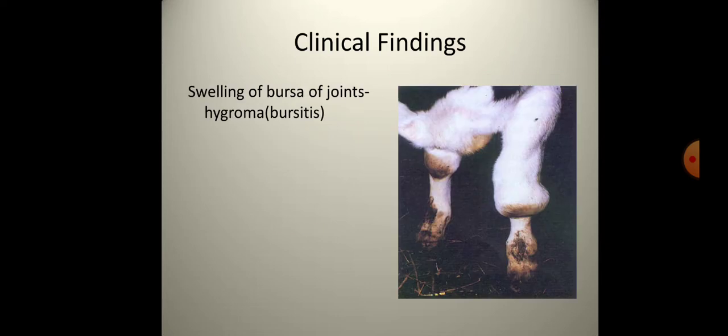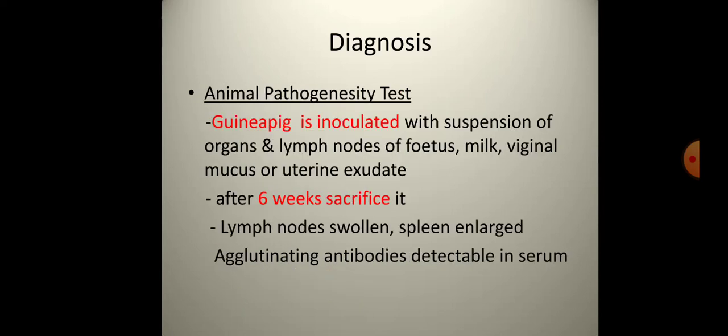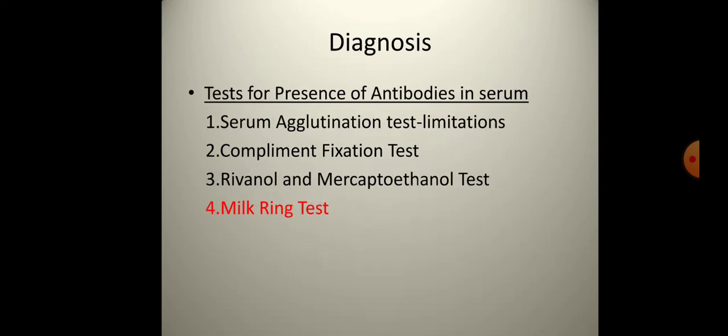Diagnosis is made by isolation of organisms from tissue, exudate, microsculture, smear content, lung of aborted fetus, spleen, placenta, uterine exudate, vaginal discharge, and milk. In animal pathogenesis testing, guinea pigs are inoculated with suspension of organs and lymph nodes of the fetus along with uterine exudate; after six weeks, sacrifice shows enlarged lymph nodes and agglutinating antibodies in serum. Serological tests include serum agglutination test, complement fixation test, and Rivanol and mercaptoethanol tests.